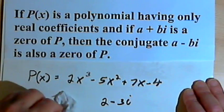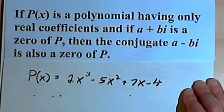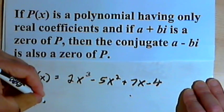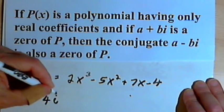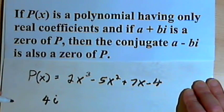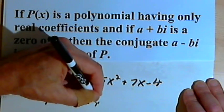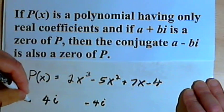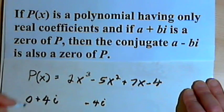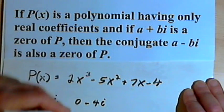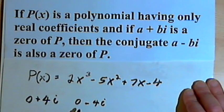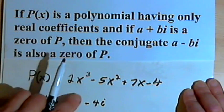If you were told that one of the zeros was, let's say, just 4i, then it would mean that you would have a pair, which would be negative 4i. You could think of this as zero plus 4i. Zero would be the real part, and zero minus 4i.